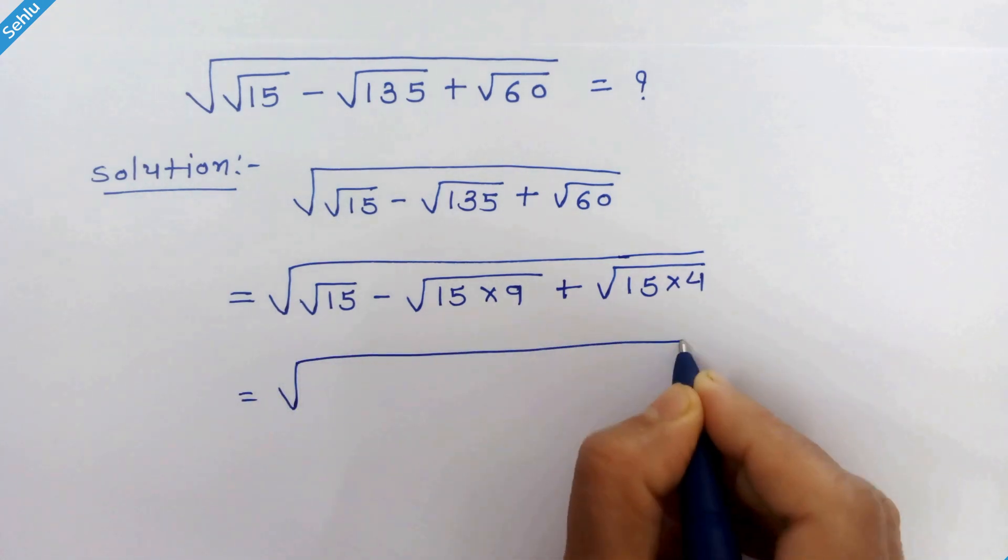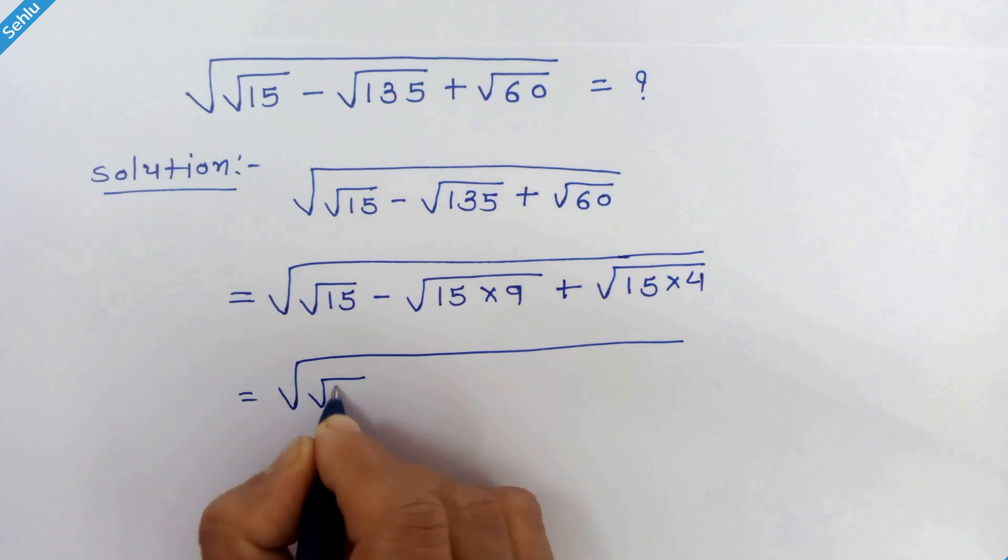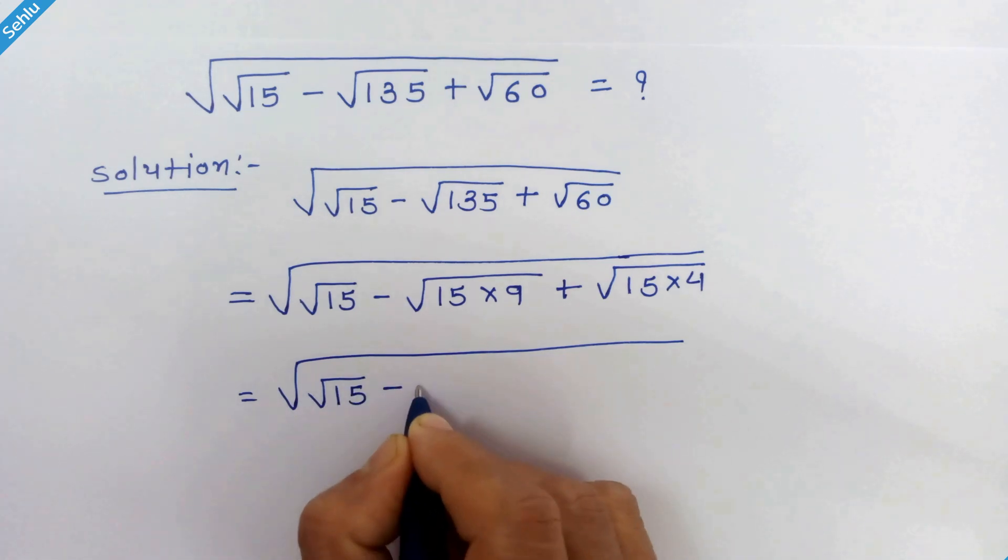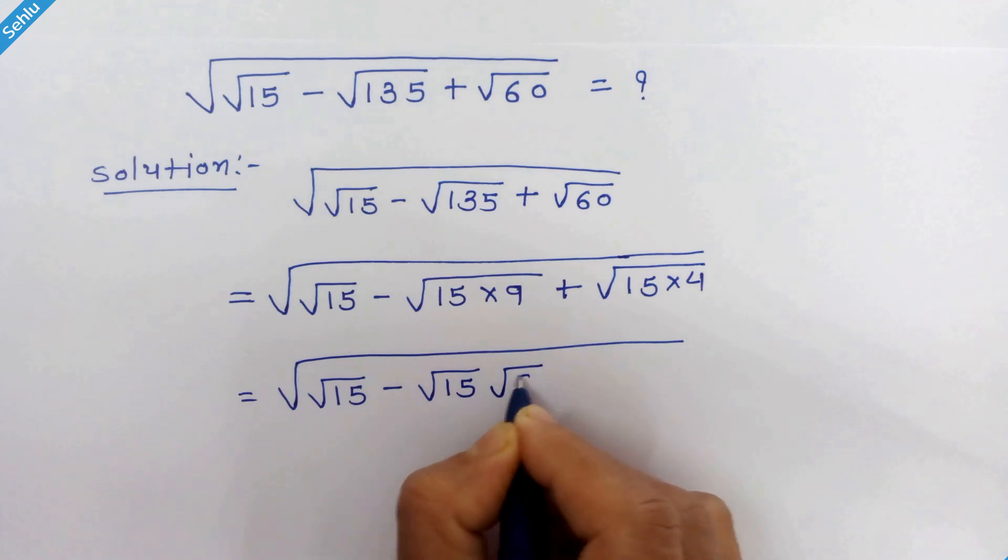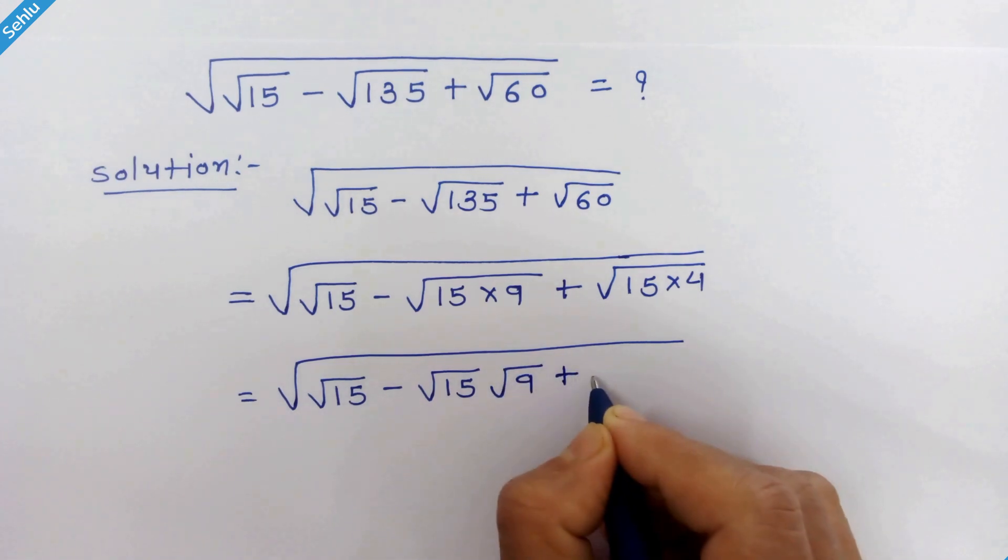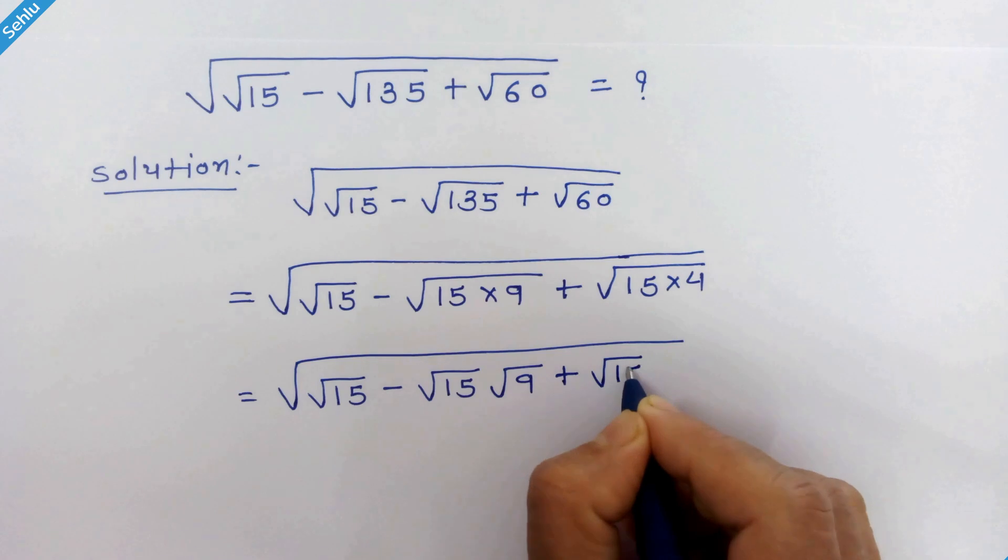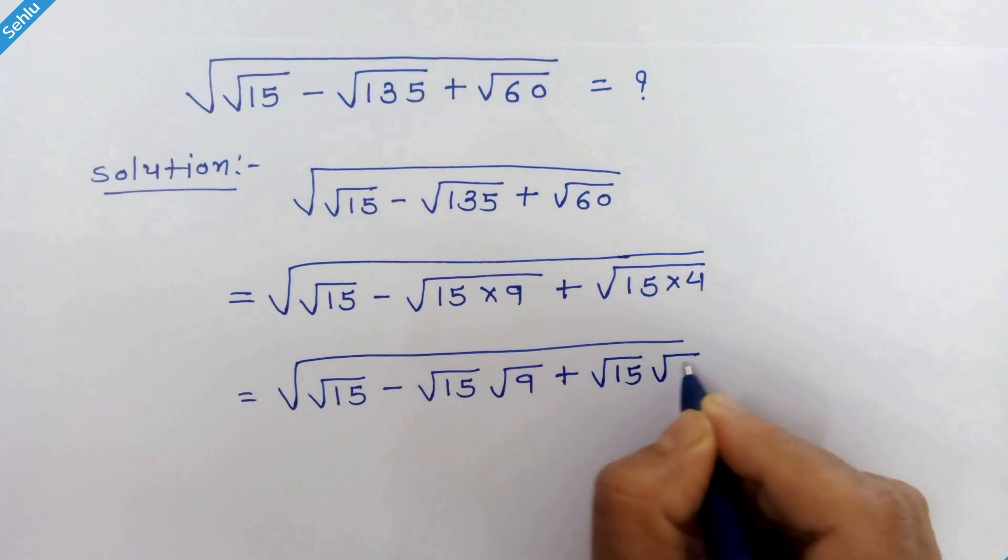Now we can write it like square root of square root 15 minus square root 15 times square root 9 plus square root 15 times square root 4.